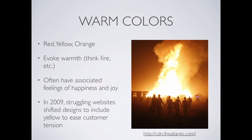In 2009, during the online ecosystem bubble burst, struggling websites shifted their color schemes to include yellow to ease customer tension and make people a bit happier. These kinds of things happen very subtly and can transform how we perceive an environment. Today I'll show a lot of web examples — going through several major companies and how their websites have evolved from around 1996 through today — to see how colors weave their way in and out of what we see every day.